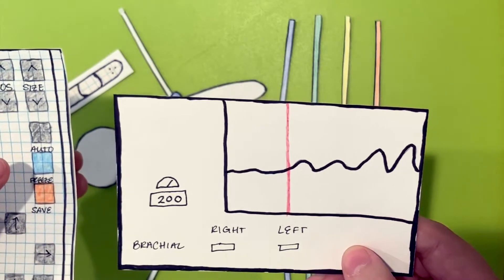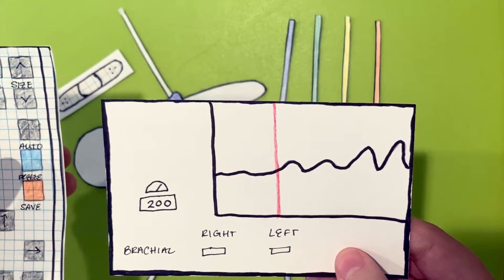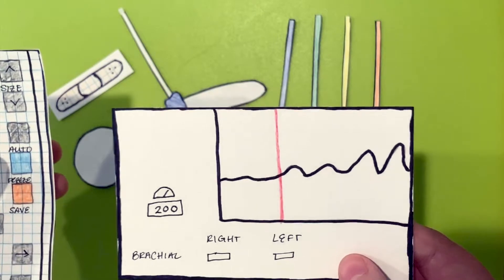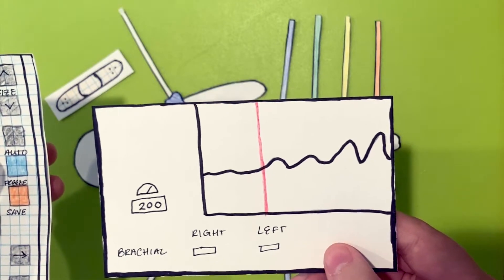Then you will repeat on the other arm. You will use the higher of the two pressures for calculations. If there is a greater than 20 pressure difference between the arms, this could indicate subclavian artery stenosis.